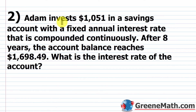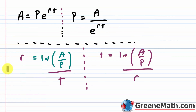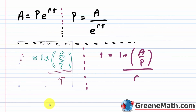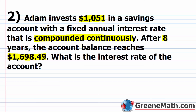Adam invests $1,051 in a savings account with a fixed annual interest rate compounded continuously. After eight years, the account balance reaches $1,698.49. What is the interest rate of the account? Again, we're solving for r.